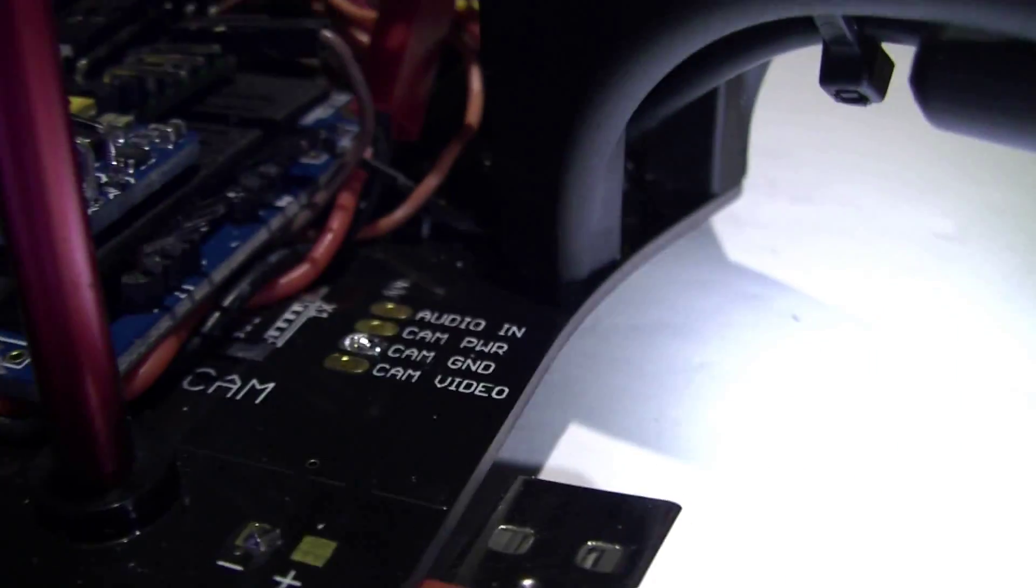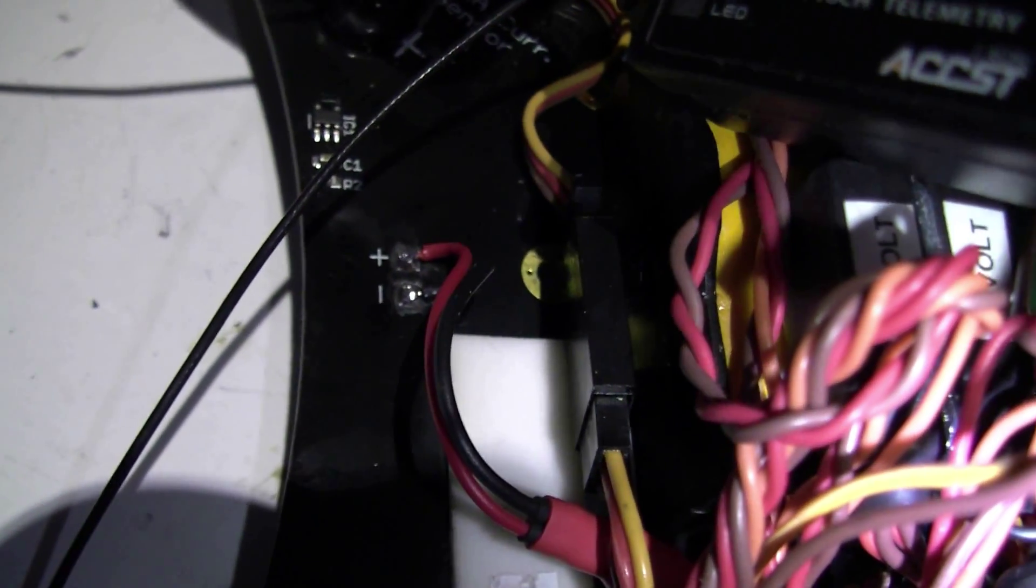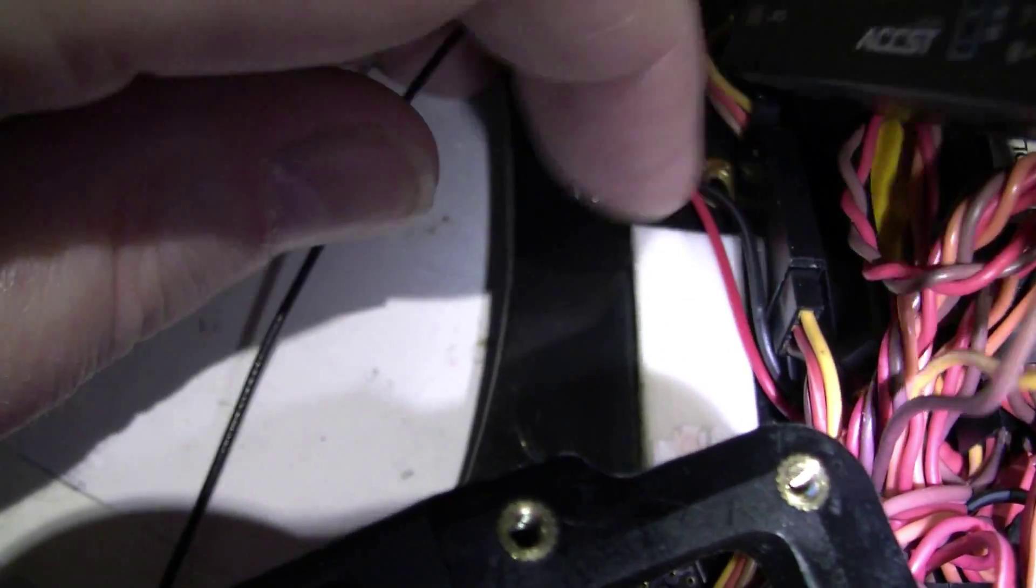It's a shame you can't see it under there actually. So we've got the voltage sensor wired in there. Now what I generally tend to do is put some hot glue or something over there, some liquid electrical tape or whatever you can get hold of, and obviously tidy your wiring up.